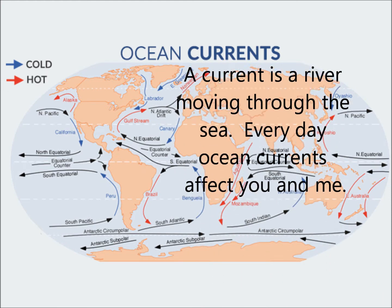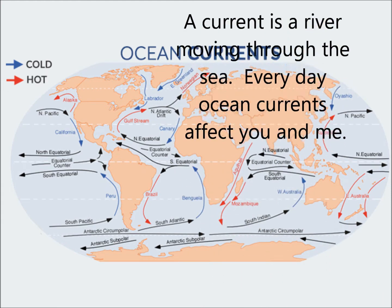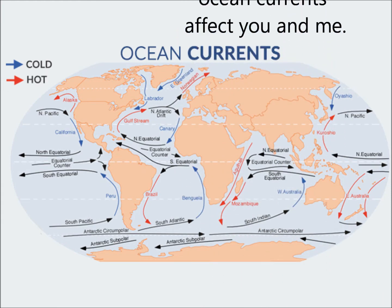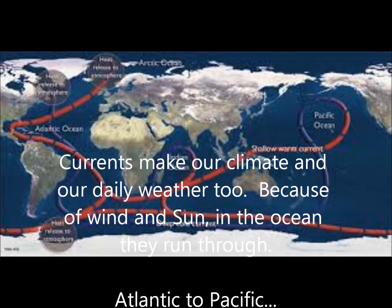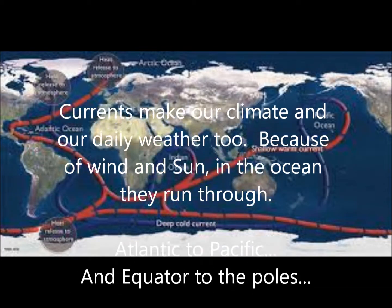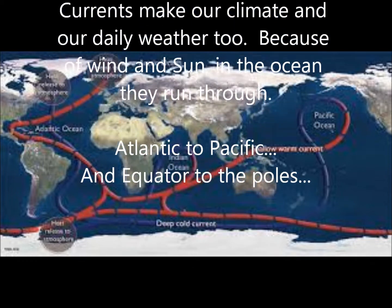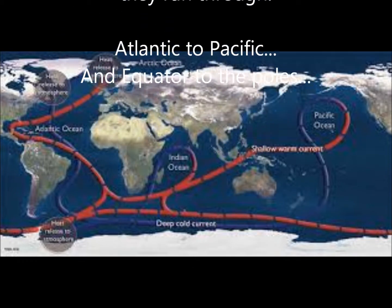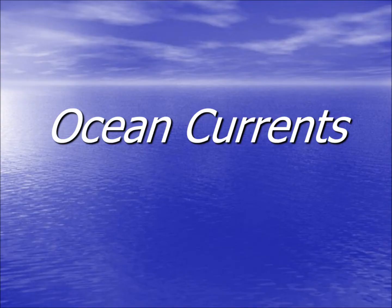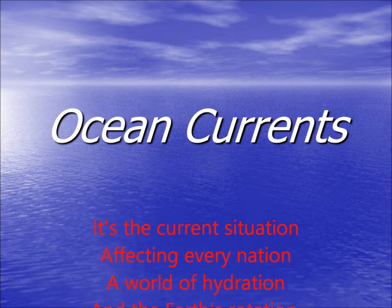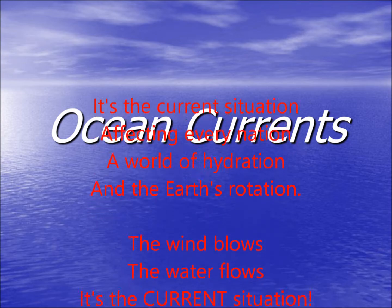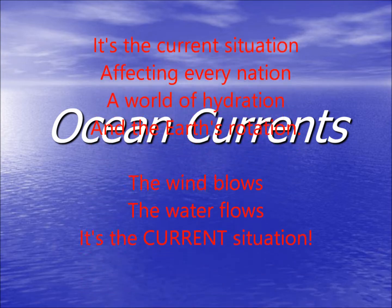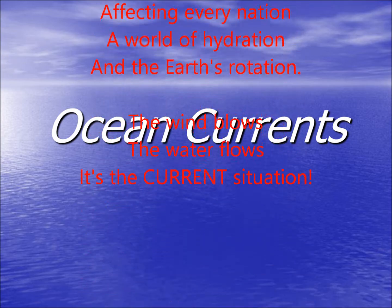A current is a river moving through the sea. Every day ocean currents affect you and me. Currents make our climate and our daily weather too, because of wind and sun and the ocean they run through. Atlantic to Pacific and equator to the poles — it's the current situation, affecting every nation.